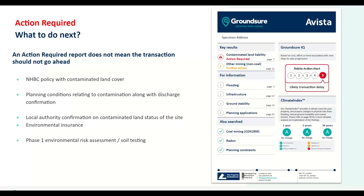Otherwise, you could go through planning — if you've got planning conditions relating to contamination along with a discharge confirmation from the local authority, that will also help downgrade the risk and we can change from action required to a pass. A third way is speaking to the local authority or the environmental health department. We have a set of questions we can provide — it's only about three questions — and depending on what the answers are, we can then change or downgrade the risk. More than half of flagged cases, if not more, are actually downgraded once we have the additional information.